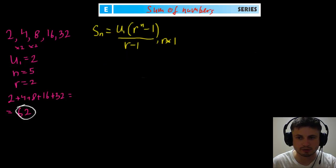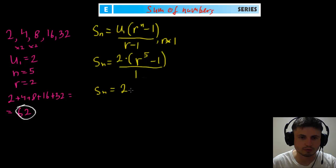So to find the sum here, we just have to do the same thing we did before. And we'll just put u1 in here. So u1 is two multiplied by r, which is two to the power of n, which is five minus one, and then divided by r minus one, which is one. So let's try to calculate this. So it's going to be two times two to the power of five, which is, I believe, 32.